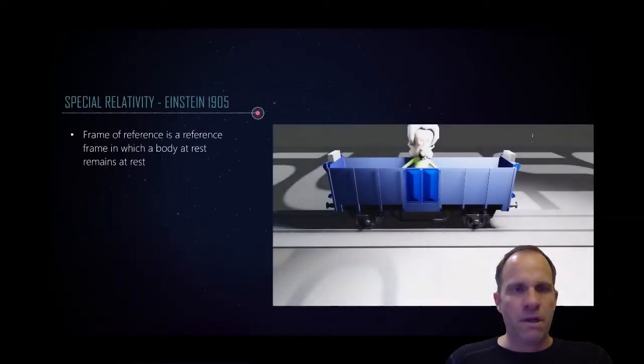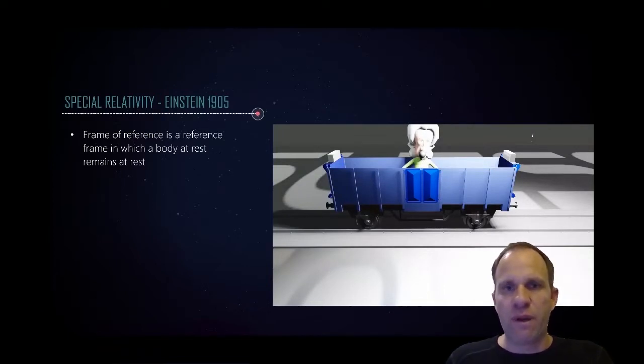But now let's move to the amazing Albert Einstein and the year 1905. We locate Albert Einstein into a frame of reference. A frame of reference is a reference frame in which a body remains at rest. For example, a spaceship in outer space which travels with constant velocity is a frame of reference.